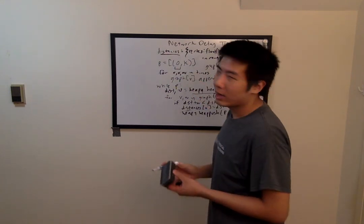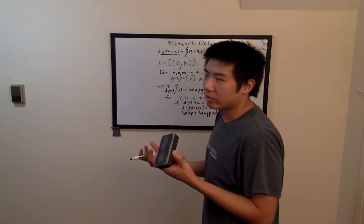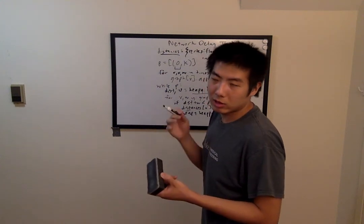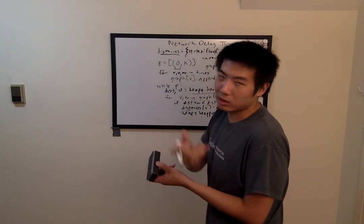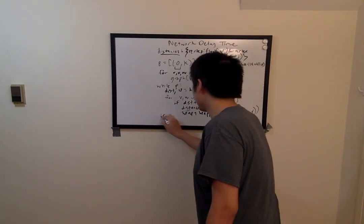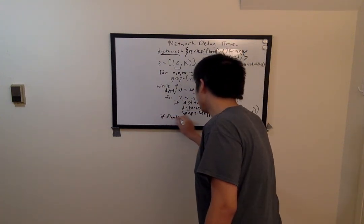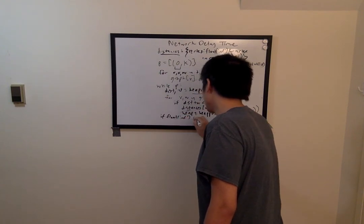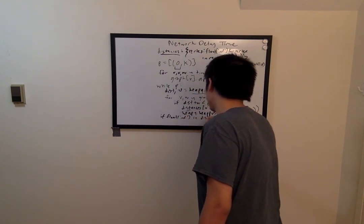So then we can ask ourselves, is there a viable path to every vertex? If there's not, we return minus 1, otherwise we return the largest shortest path distance. So if float of inf is in distances dot values,